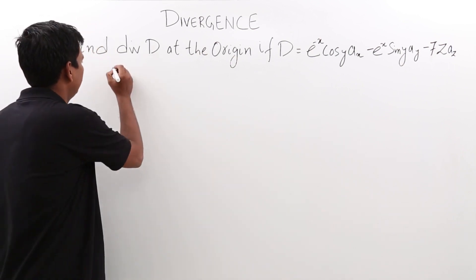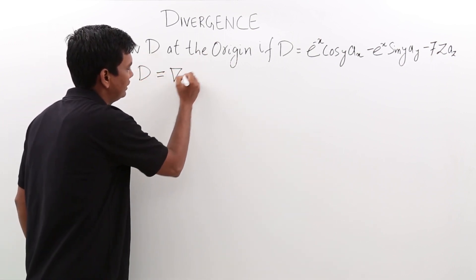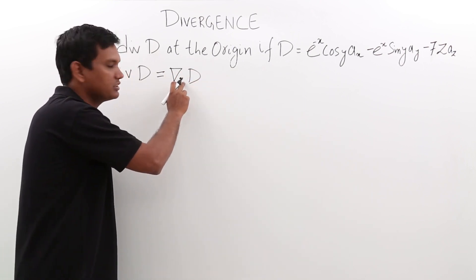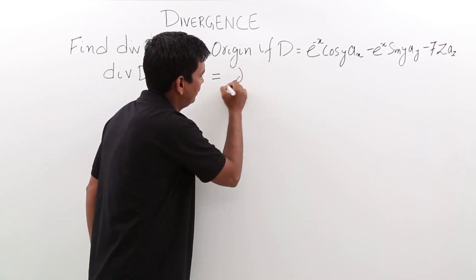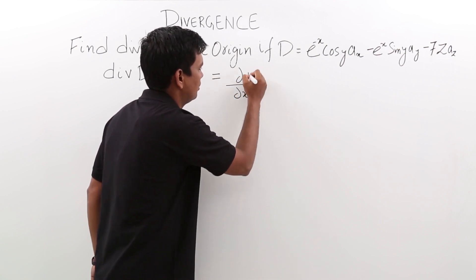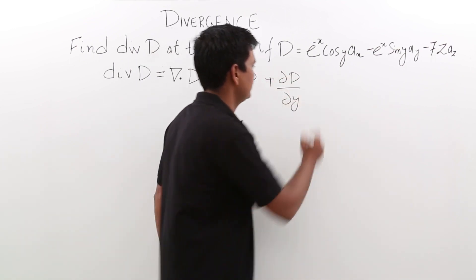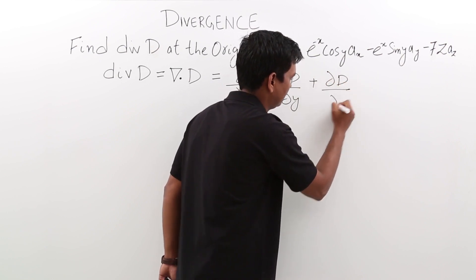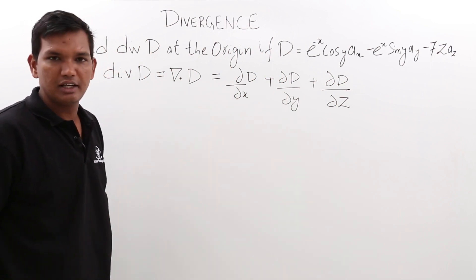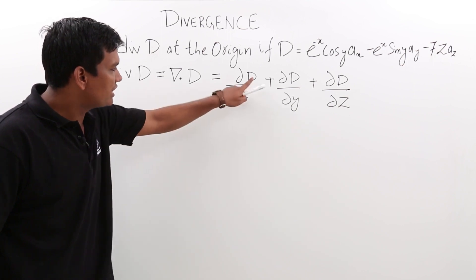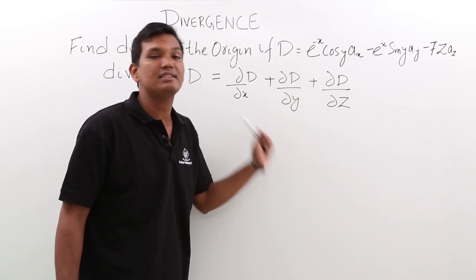By definition we know that divergence of D is given by del dot D, where del is the operator, dot is the dot product, and D is the field given to us. This would be nothing but del/del-x of Dx plus del/del-y of Dy plus del/del-z of Dz. This is the variation of the D field along the x-axis, the variation along y, and the variation along z — and remember, this is partial differentiation.